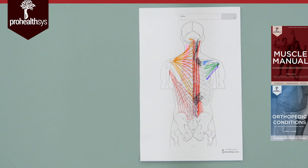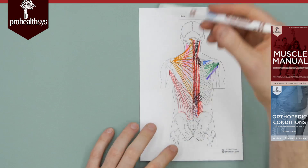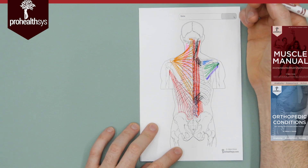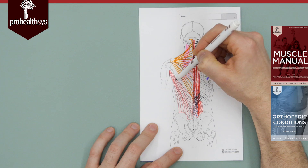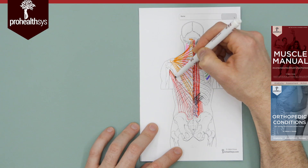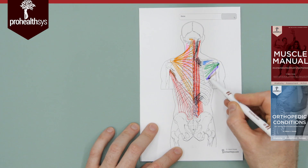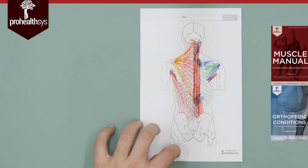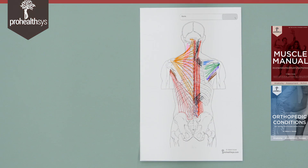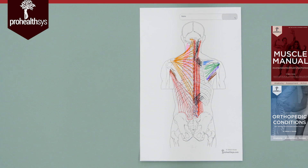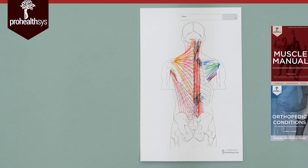We also have teres major, known as the 'little latissimus.' It originates from the lateral border of the scapula — inferior area — and inserts on the medial lip of the bicipital groove, just a little bit more medial than latissimus. They actually insert right next to each other. If you know latissimus, you know teres major — they both do the same thing. That takes you through most of those muscles.